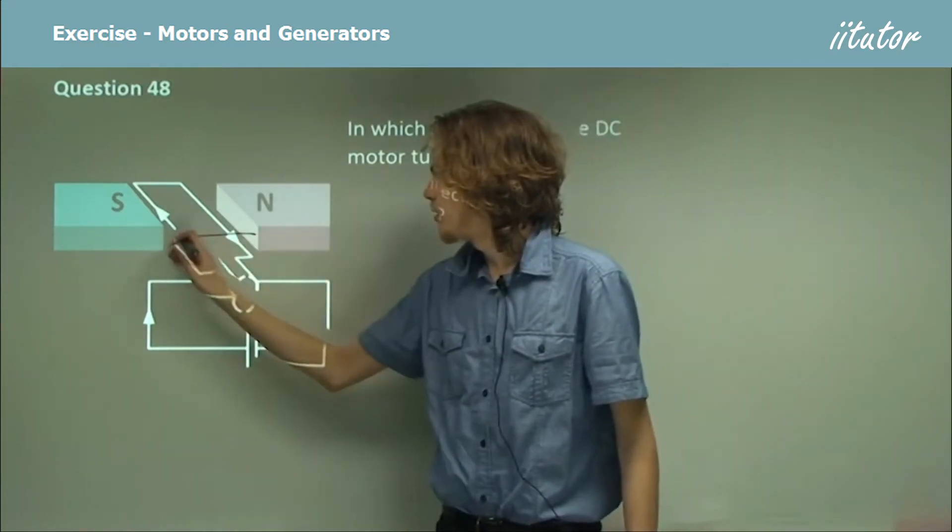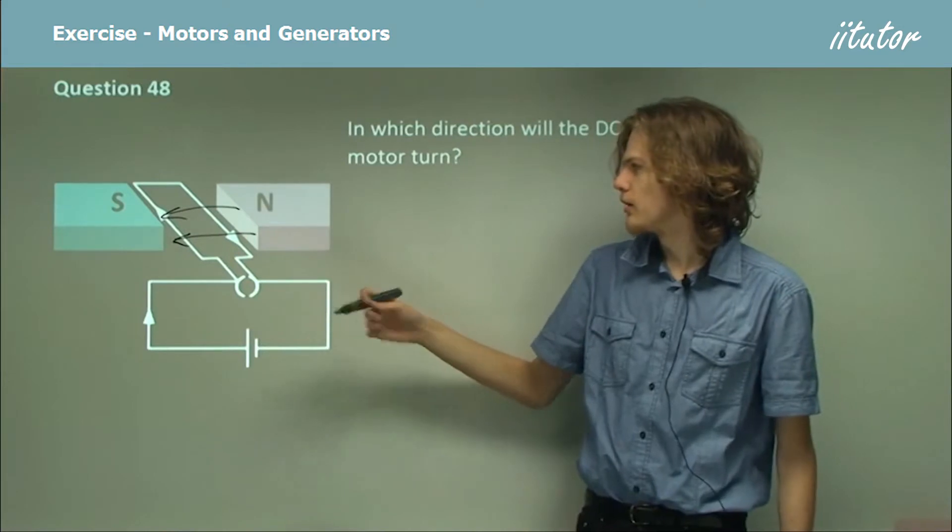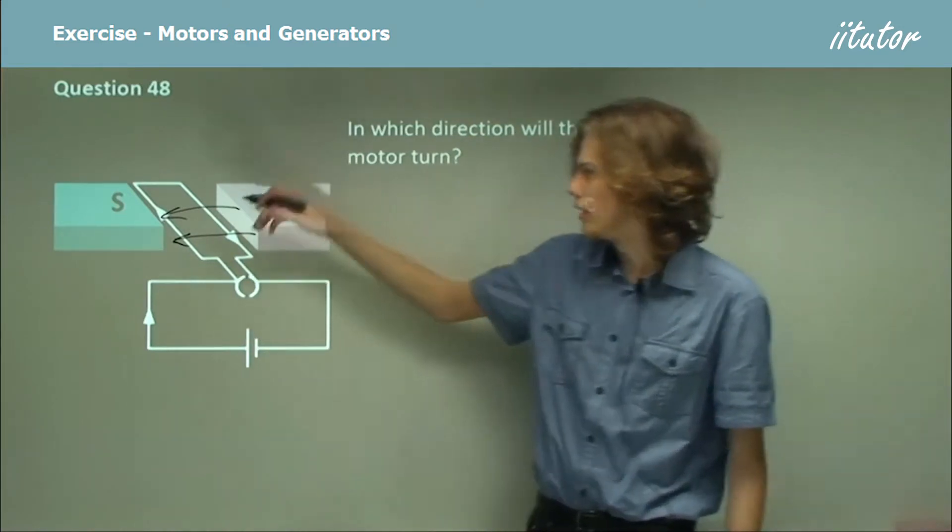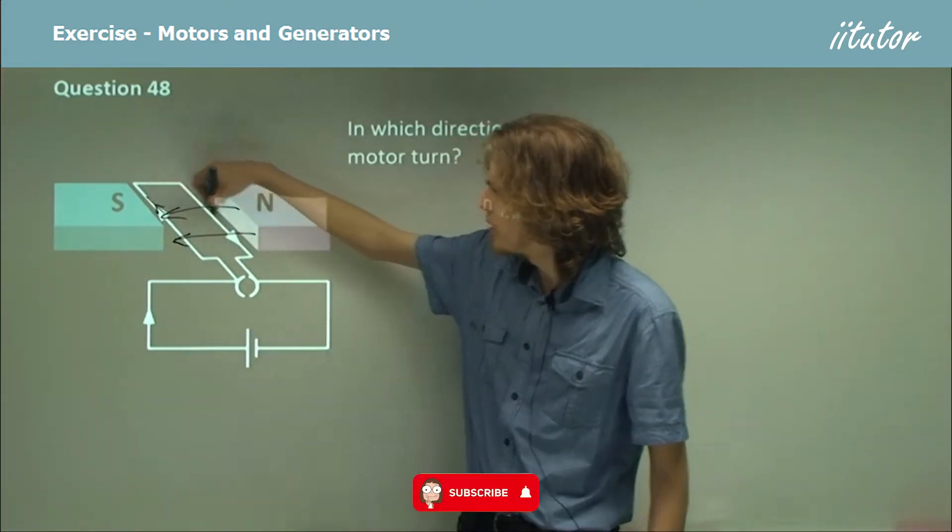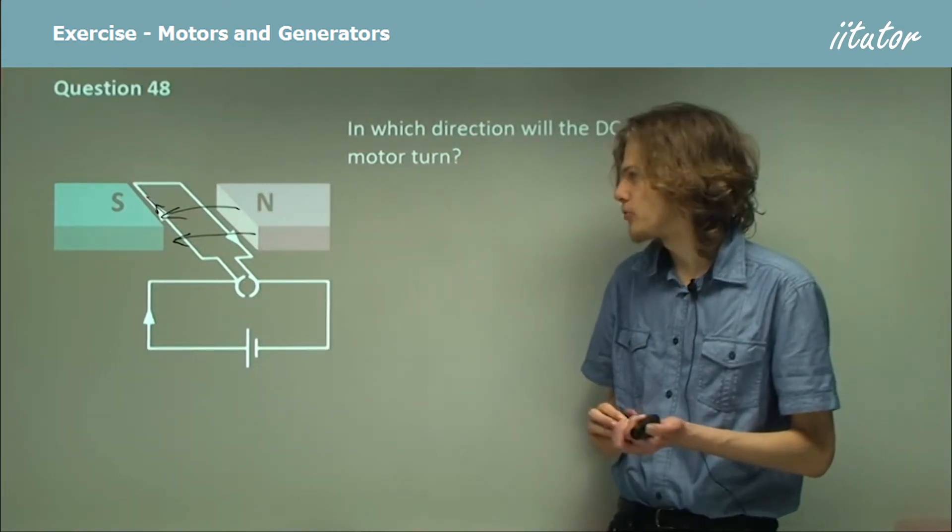We've got magnetic field lines pointing in that direction, we've got current flowing up in that direction and down in the other direction, so we can use the right hand rule to figure out the force.